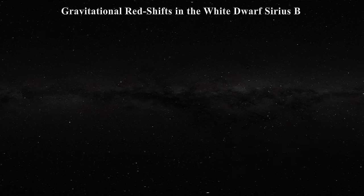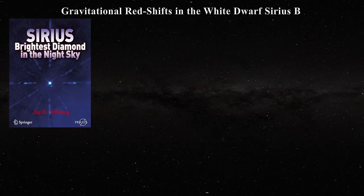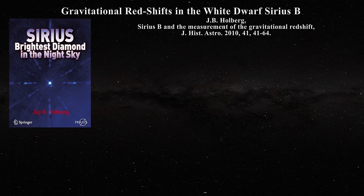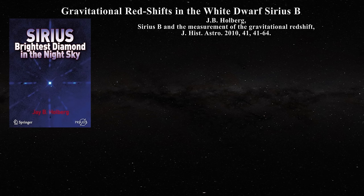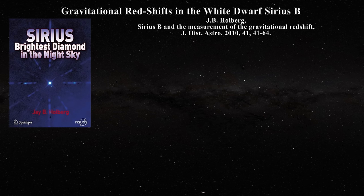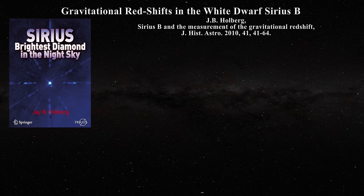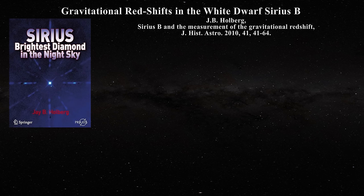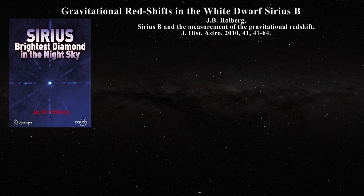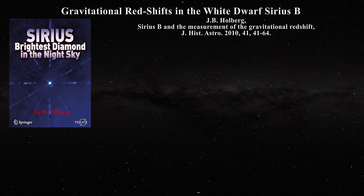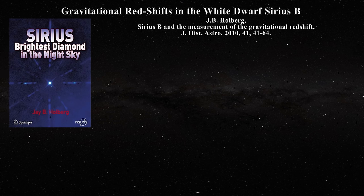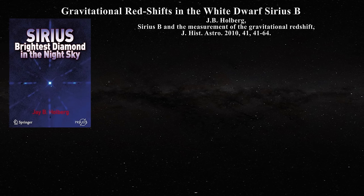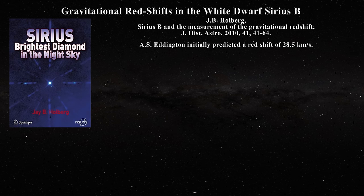Professor Holberg has produced a wonderful text on the Sirius system and a paper on the early history of gravitational redshift measurements of Sirius B. In chapter 9 of his book, Holberg outlined how Eddington reached out to Walter Adams of the Mount Wilson Observatory to measure the redshift of Sirius B. The letters exchanged between the two have been reprinted in their entirety in the aforementioned paper. The problem was that Eddington informed Adams in advance of his expectations, claiming that the redshift of Sirius B would be about 28.5 kilometers per second.